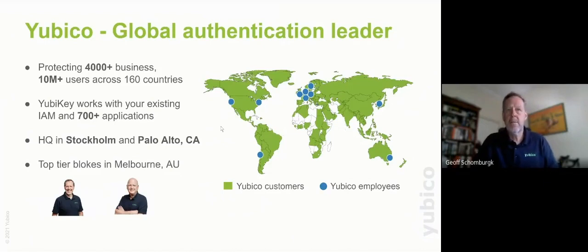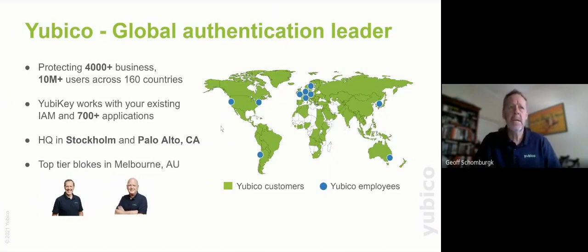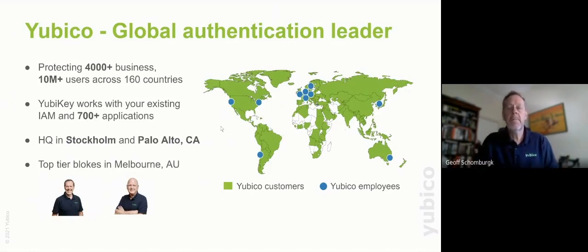Just briefly to get started, for those of you that are not familiar with Ubico, a brief introduction to who we are. We're a company that was founded and born out of Sweden but has moved our head office to Palo Alto in Silicon Valley in California. Over the journey of the last 10 years or so, we've been able to protect over 4,000 businesses and 10 million users of the YubiKey scattered around the globe across some 160 countries. Many of the top tech companies — Google, Facebook, Microsoft, and so on — are active users of the YubiKey. We work to open standards, which is key to getting YubiKeys out there and securing people online. And we work with a catalog of over 700 different applications, including identity and access management providers.